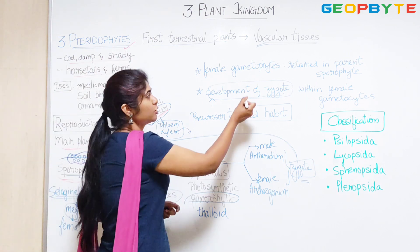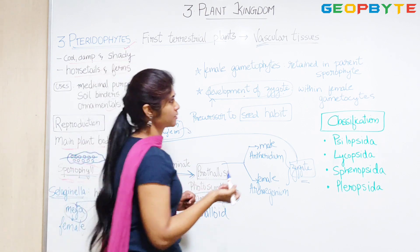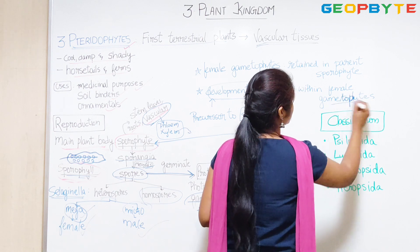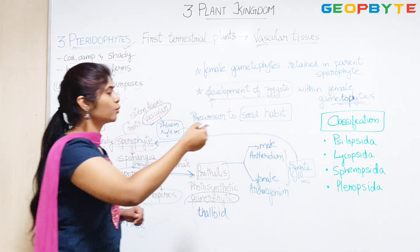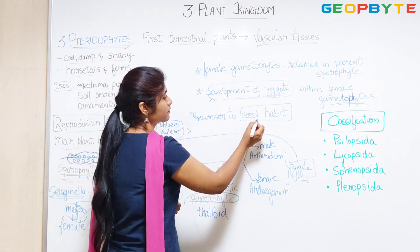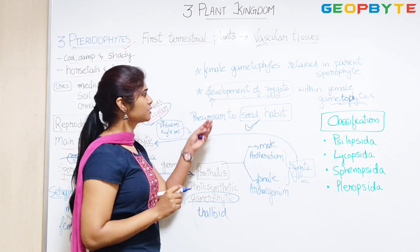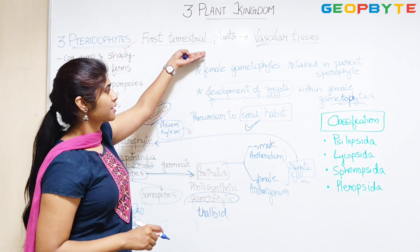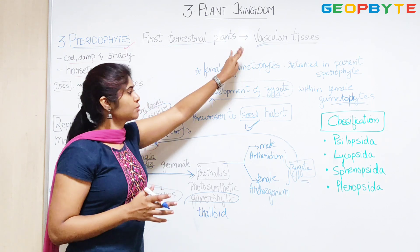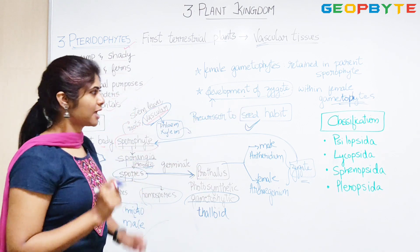The development of the zygote within the female gametophyte ultimately produces the sporophytic phase again. This development of the zygote inside the female gametophyte is a precursor to the seed habit seen in higher plants. So two key features start here: first, the presence of true vascular tissues, and second, the development of the zygote within the female gametophyte.